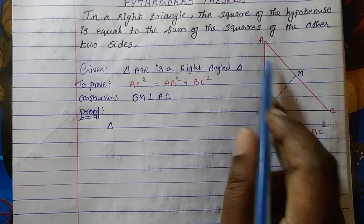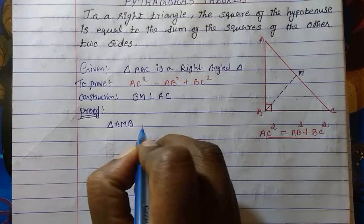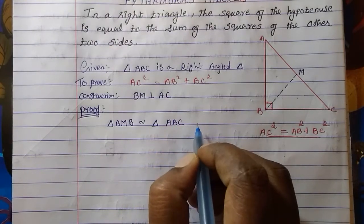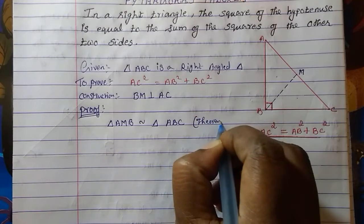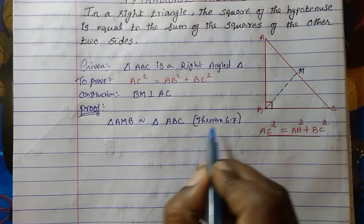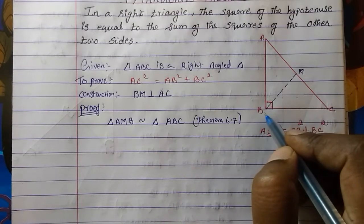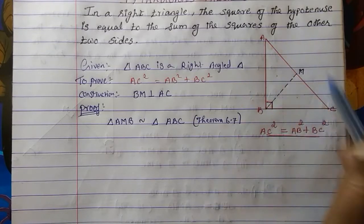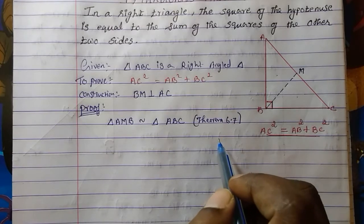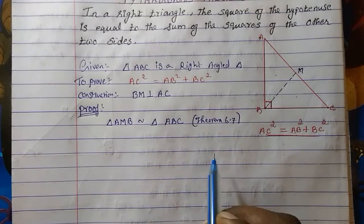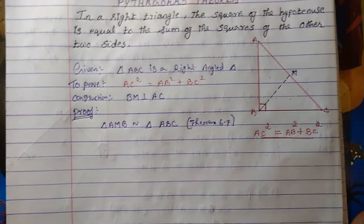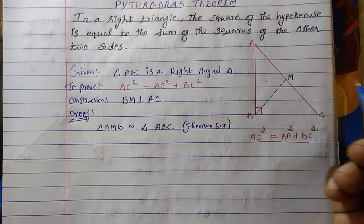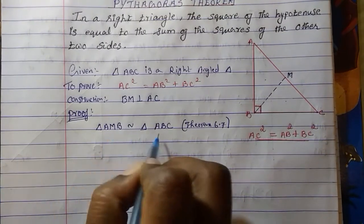So triangle AMB is similar to triangle ABC by Theorem 6.7. In the exam, you cannot just write 'Theorem 6.7' — you have to write the full explanation: a perpendicular drawn from the right angle vertex to the hypotenuse makes the triangles similar to each other and each similar to triangle ABC. Since triangle AMB is similar to triangle ABC, the ratios of their corresponding sides are also equal.